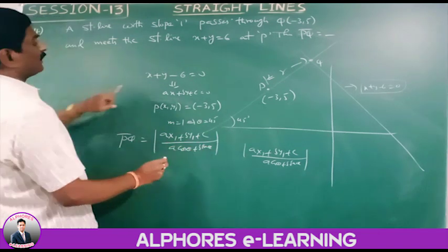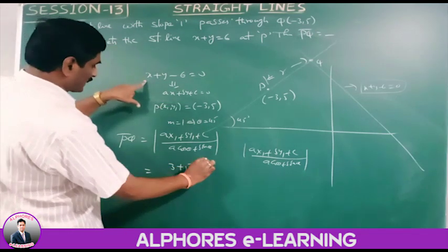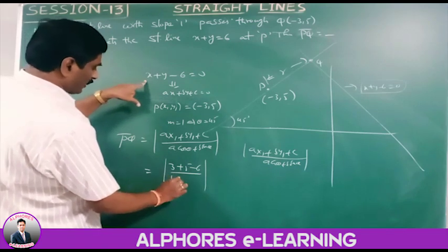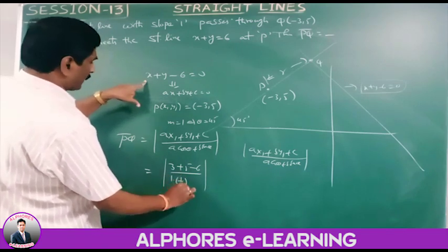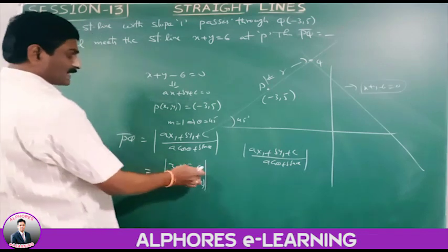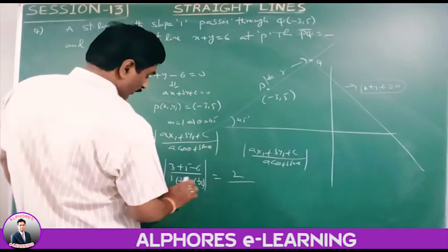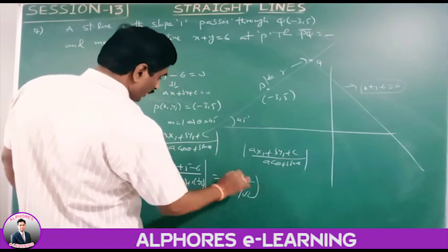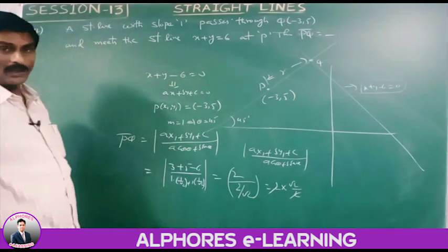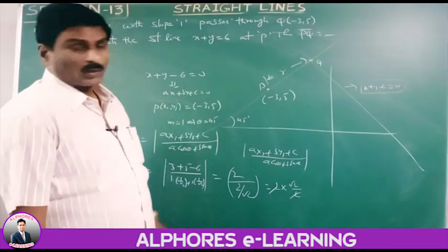Computing: |minus 3 plus 5 minus 6| equals |minus 4| equals 4... Actually: minus 3 plus 5 is 2, minus 6 gives minus 4, so |minus4| is 4. Wait — minus 3 plus 5 minus 6 equals minus 4; |minus4| = 4. Denominator = 2/root(2). PQ = 4/(2/root(2)) = ... The numerator is |minus3 + 5 - 6| = |-4| but the calculation yields 2/root(2) giving root(2) units.